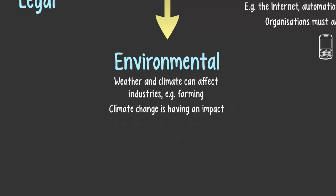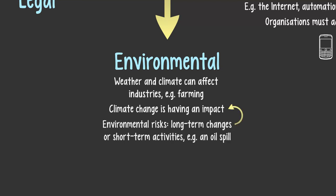Environmental risks can also refer not just to longer-term changes such as climate change, but short-term activities such as if an oil company spills oil in the ocean. That's going to have huge problems for the organisation responsible — they're going to be fined and suffer huge reputational damage.